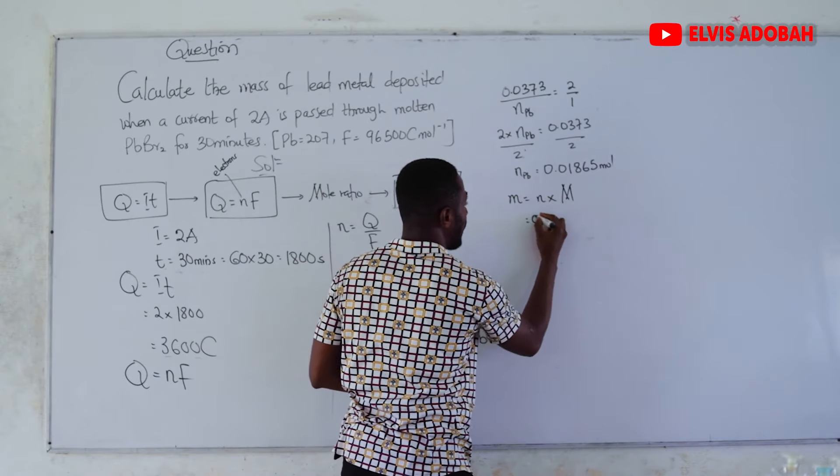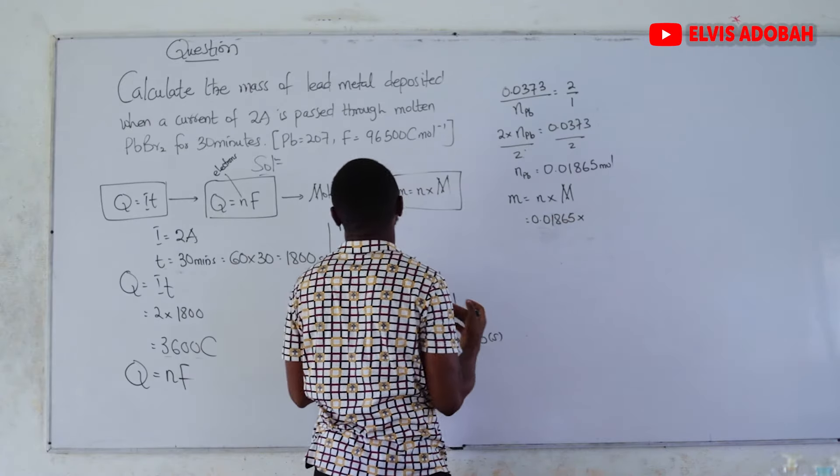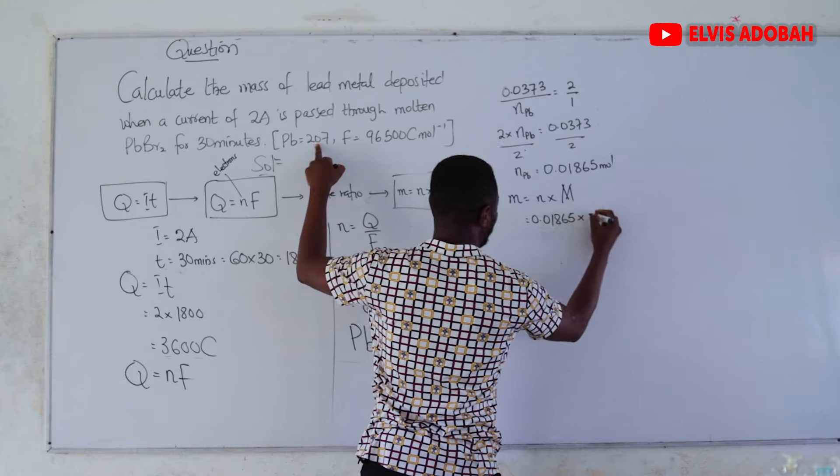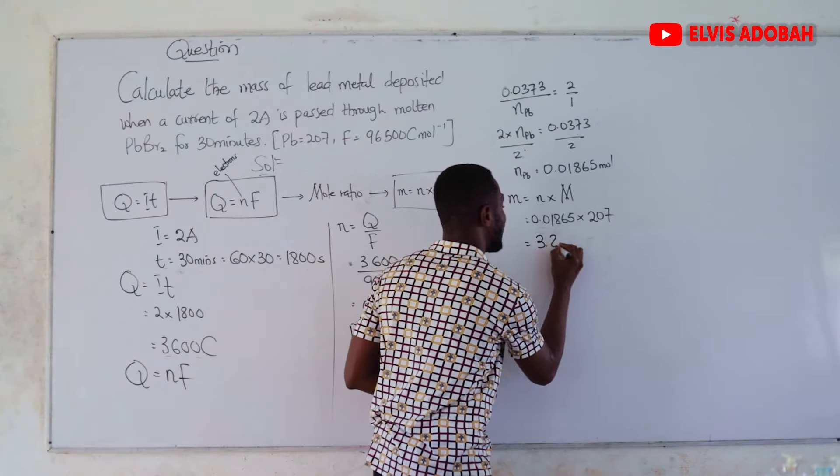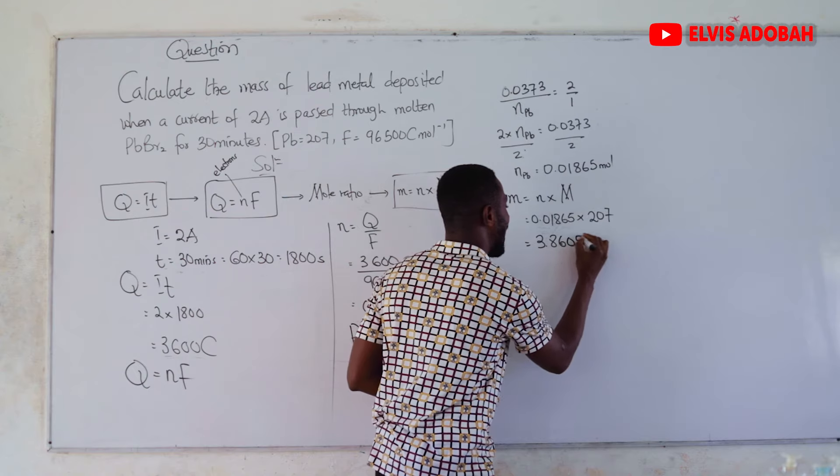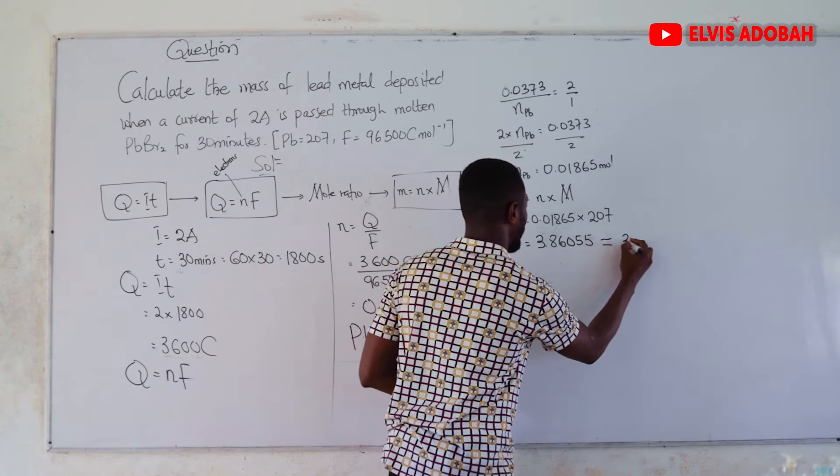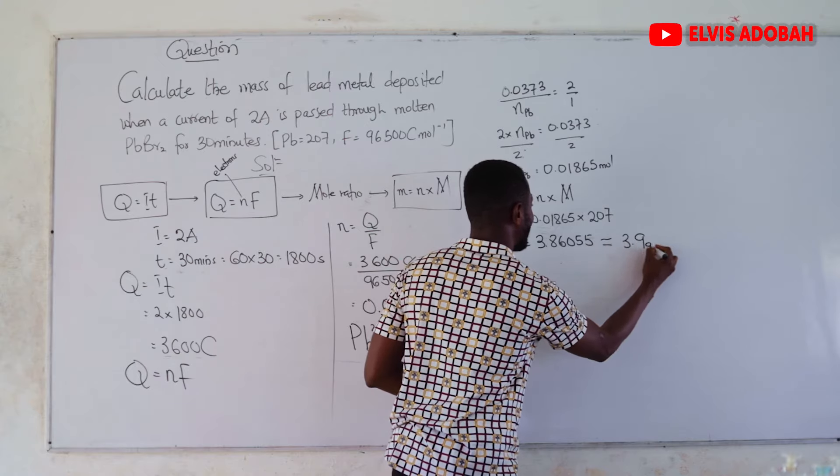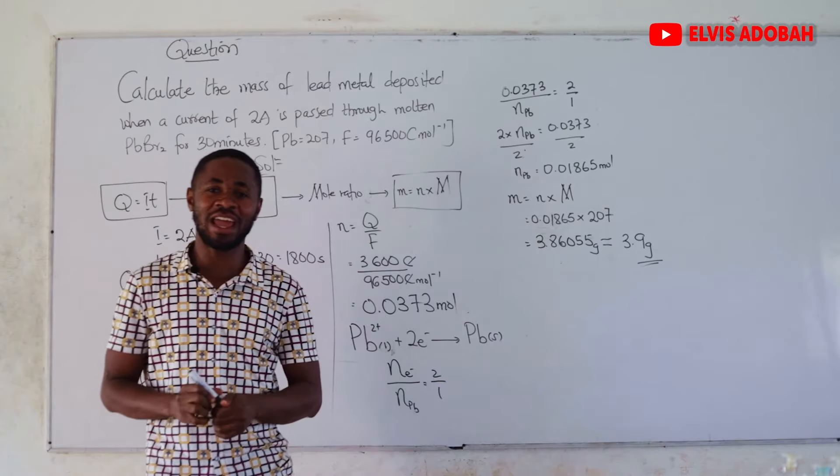We have been asked to find the mass of lead metal deposited. We just use our formula: mass is equal to amount times molar mass. So, 0.01865 times the molar mass of lead, which is 207, that will give us 3.86055.